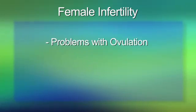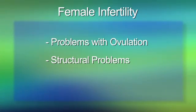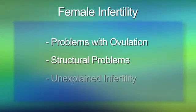Hi, I'm Dr. Roger Lobo for the American Society for Reproductive Medicine. Today, we're talking about causes of female infertility. There are three main causes of female infertility: problems with ovulation, structural problems, and unexplained infertility.